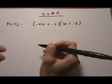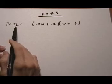5.3 number 11. In this problem we're asked to foil out two binomials.